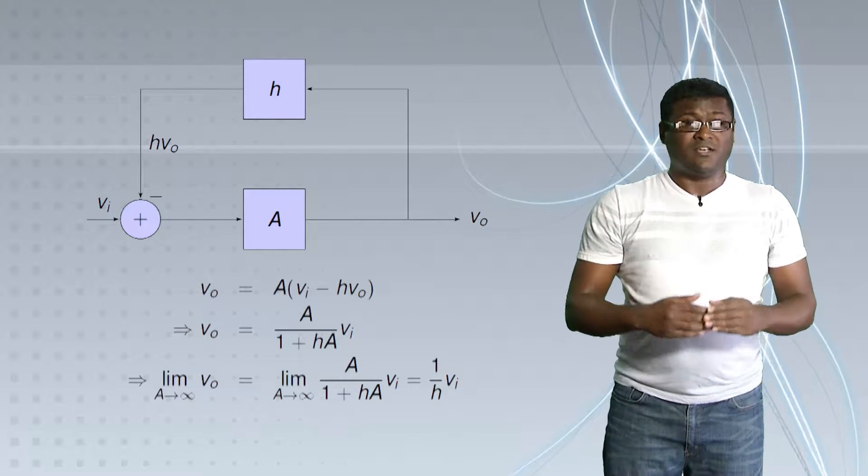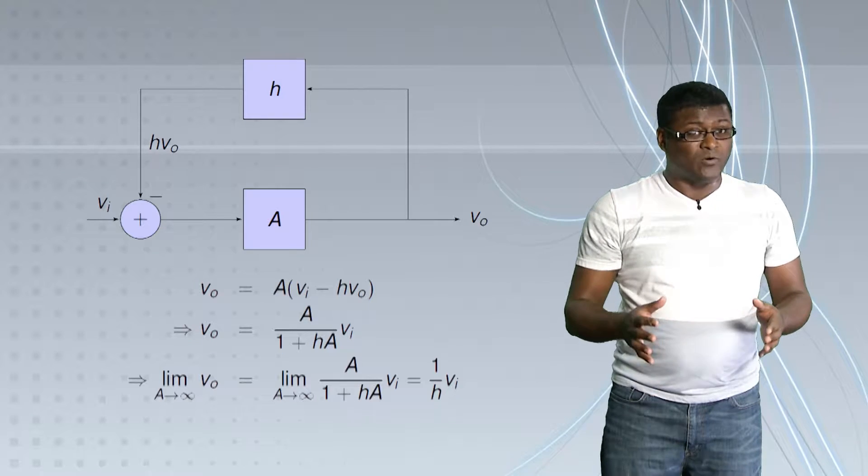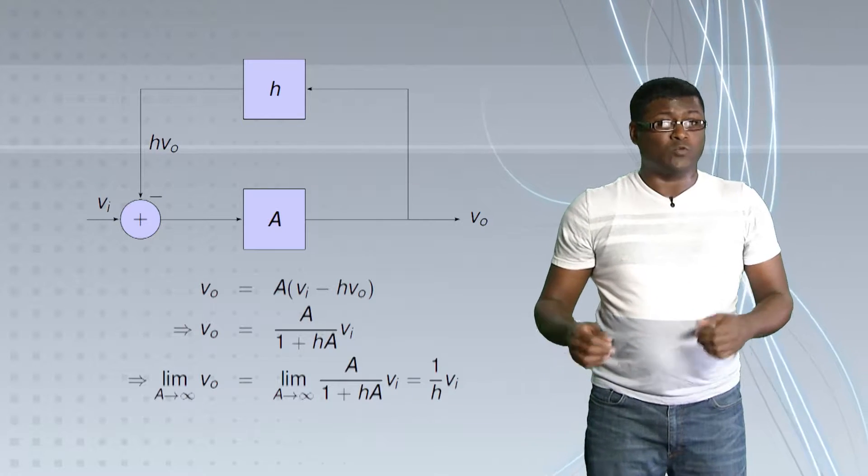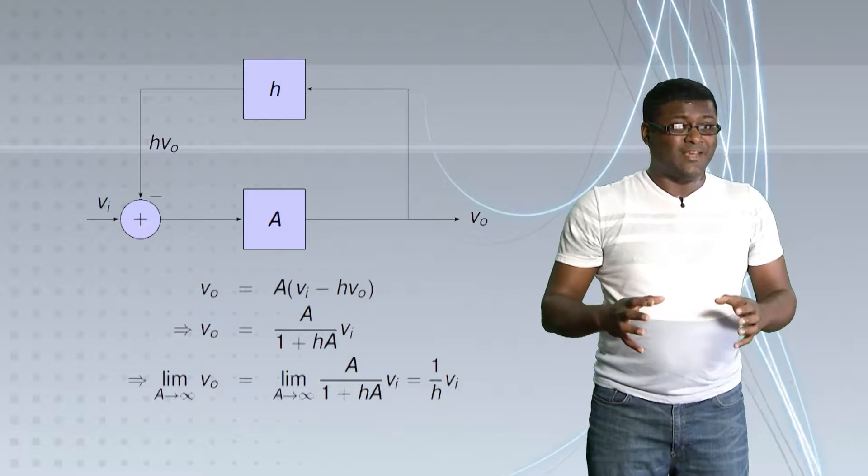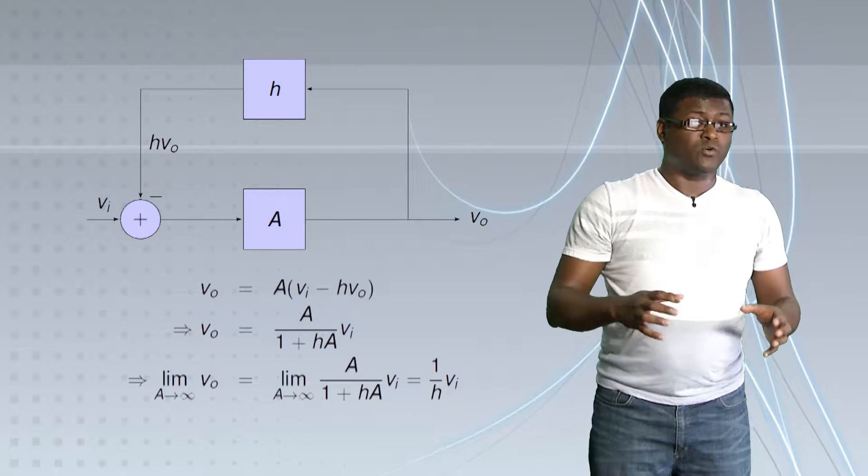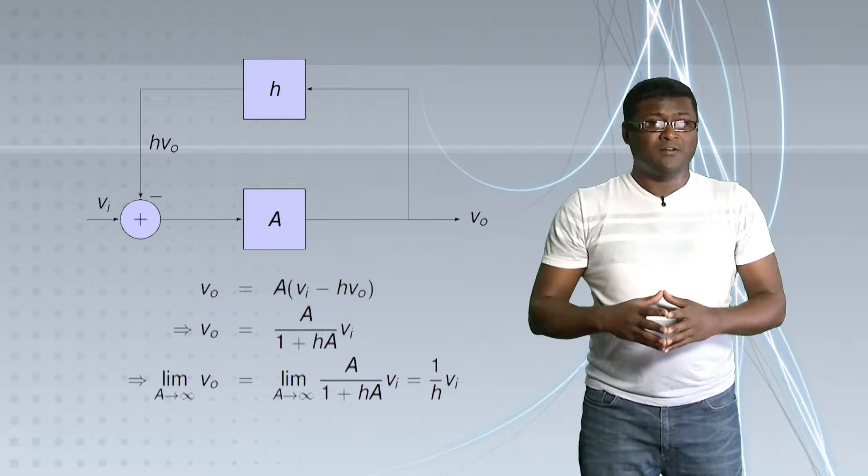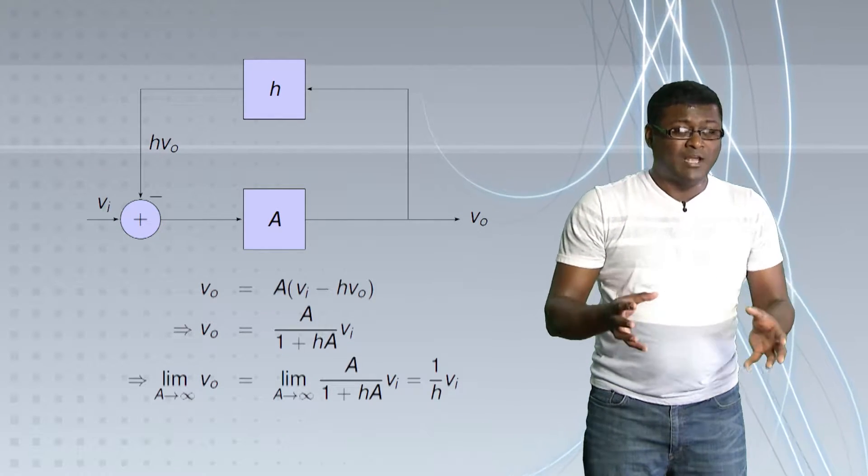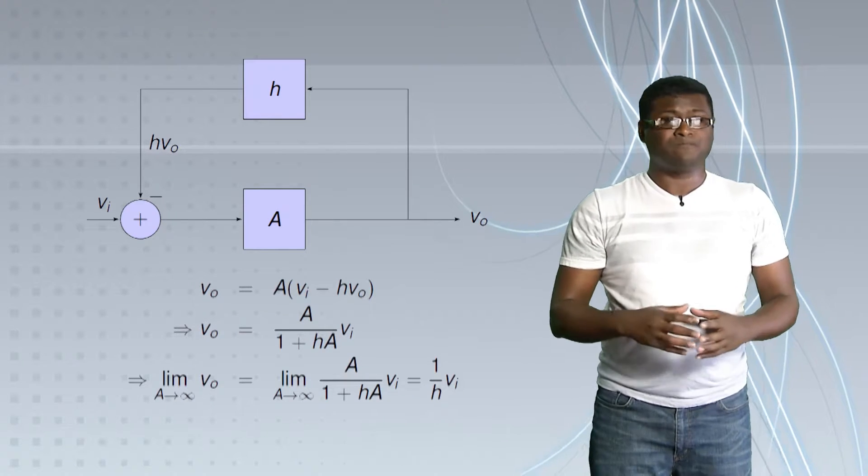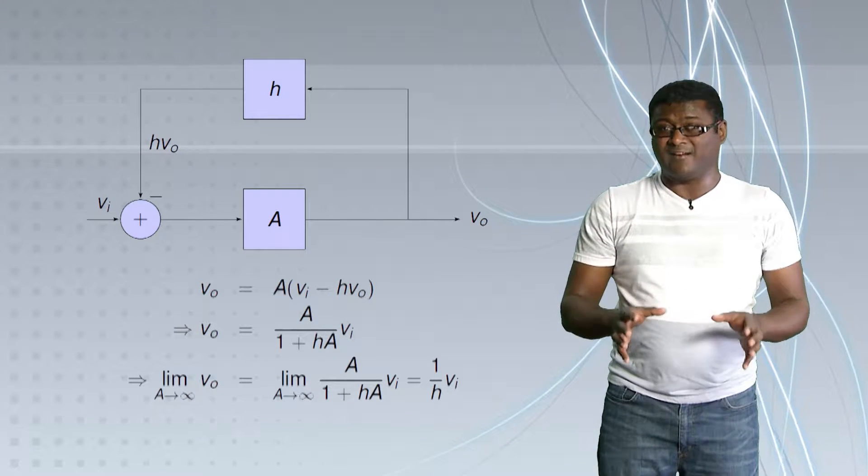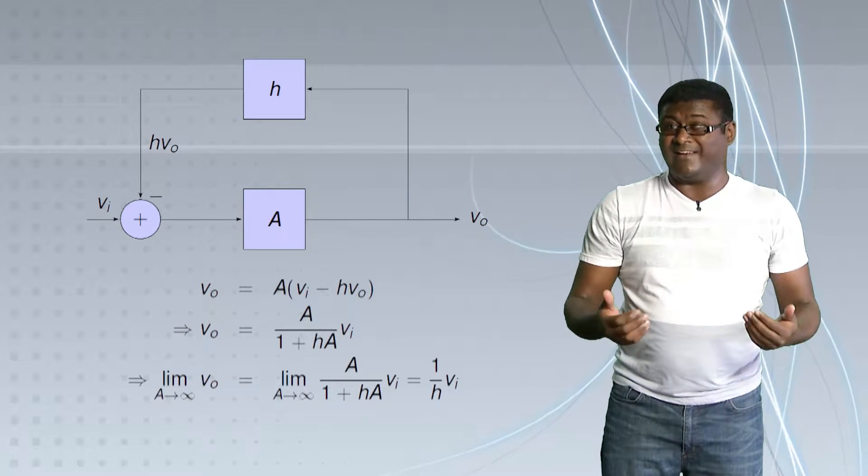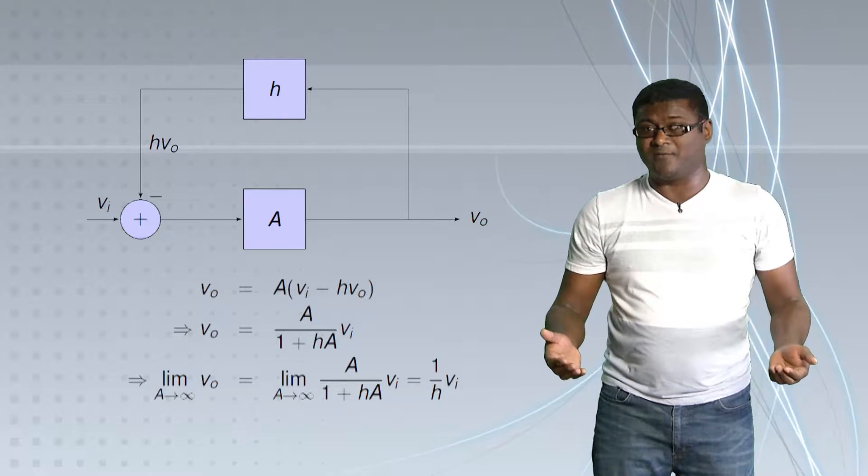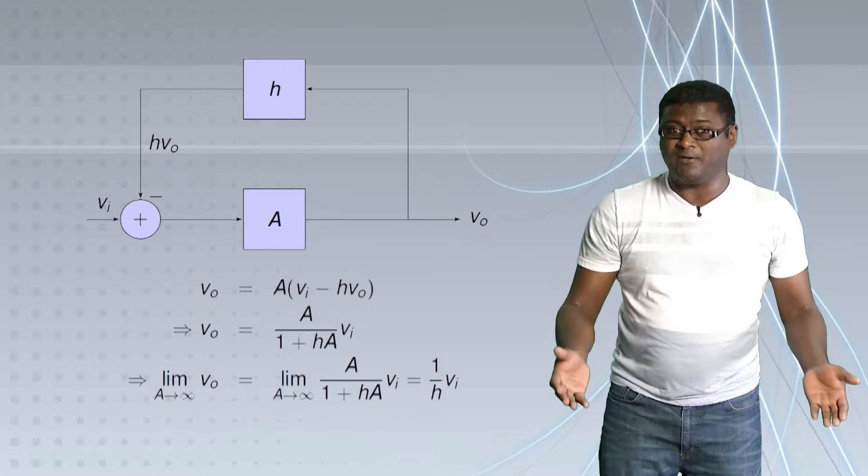That means if H is less than 1, 1 over H is greater than 1. So we can use a gain which is less than 1 to get any gain we want if we have an amplifier whose gain is infinite. Now, we've already seen in our basic electrical circuits how to get a gain less than 1 using a voltage divider. And that's precisely what we will do.